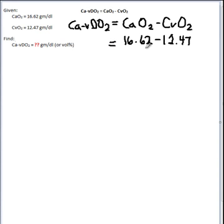So to do that, I plug in my values of 16.62 and 12.47 and subtract those, and I come up with a difference of 4.15, and that is in volumes percent or grams per deciliter as previously discussed.